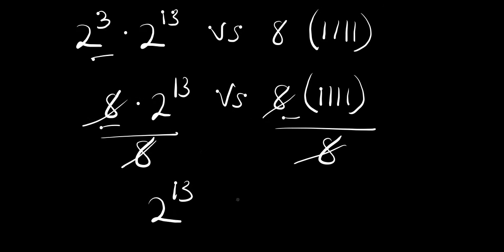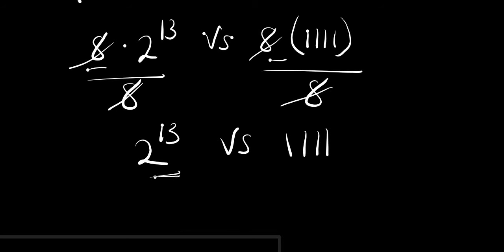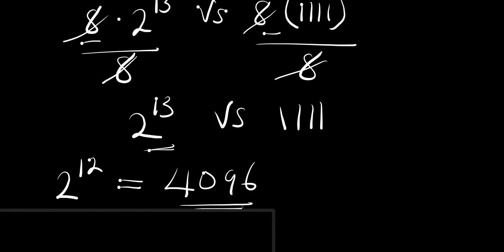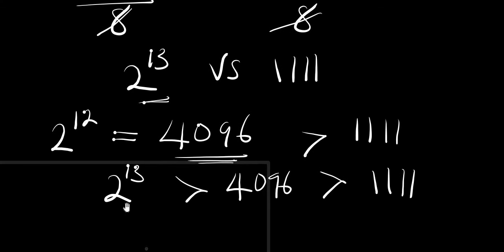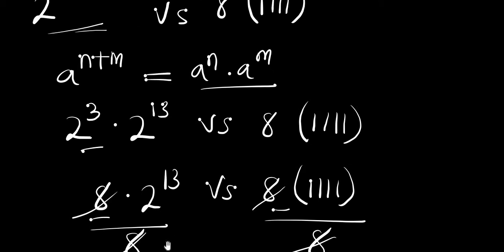Now two power thirteen is pretty high. The value of two power twelve is 4096. This value is greater than 1111, so that means two power thirteen, which is greater than 4096, is also greater than 1111. If two power twelve which is 4096 is already greater than 1111, then two power thirteen is certainly greater than 1111.